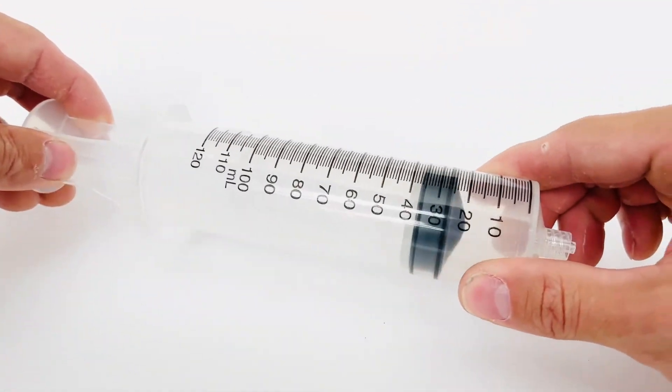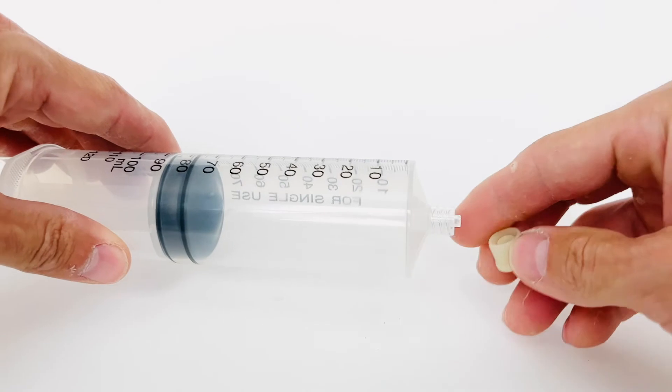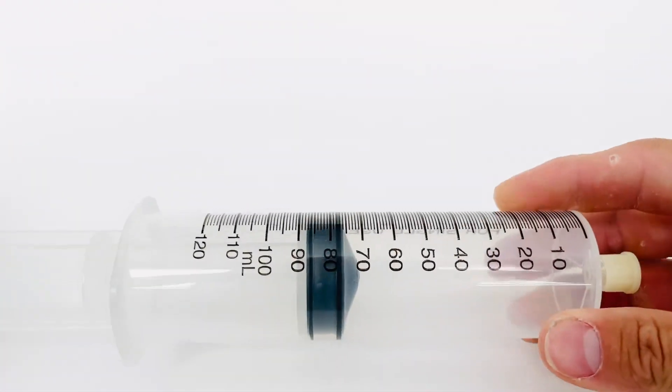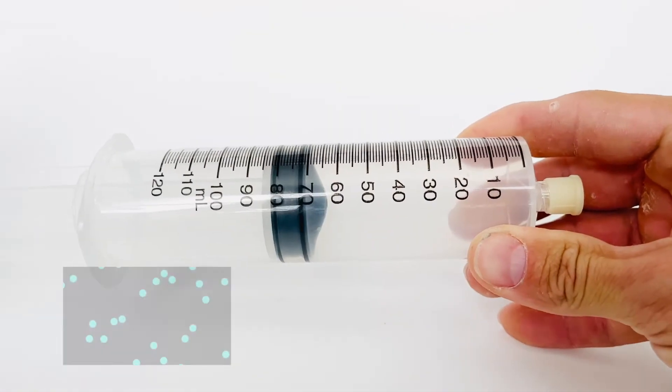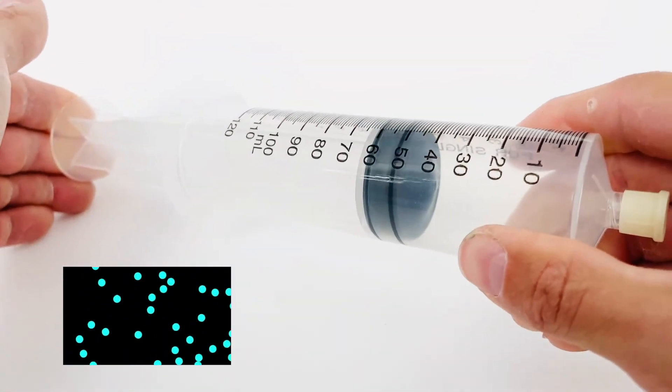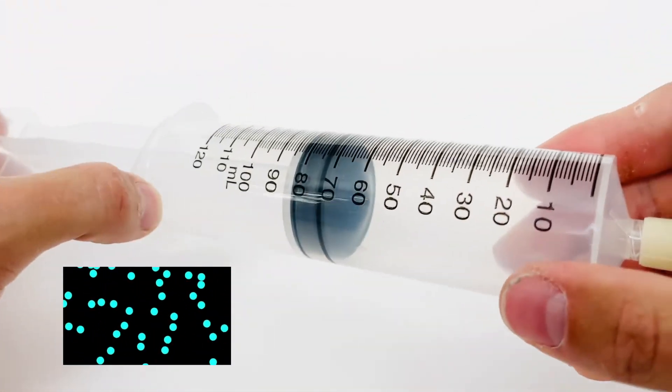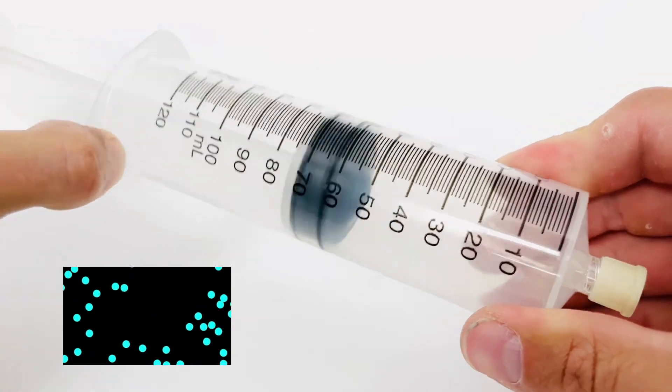Now if I fill this syringe with a gas and try to compress it, you'll see that I am able to change its volume. And again, this relates back to the particles. Since the particles are spaced so far apart, there's room to push them closer together, which is why you're able to compress a gas.